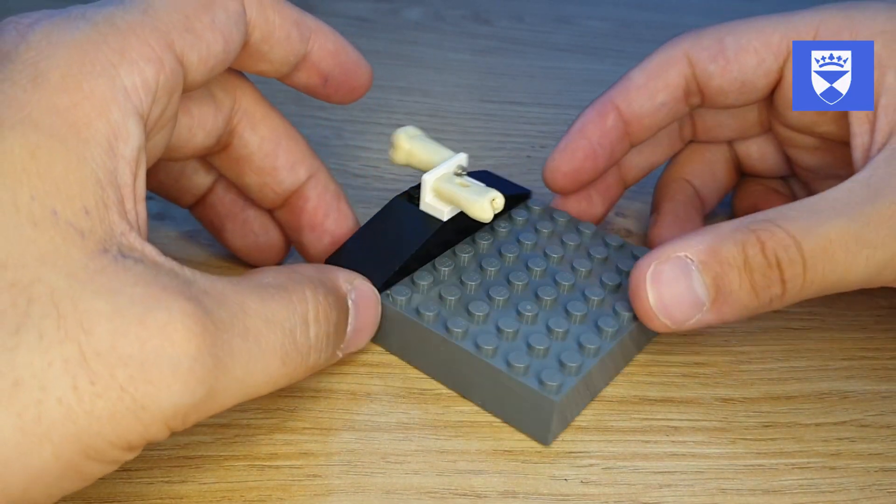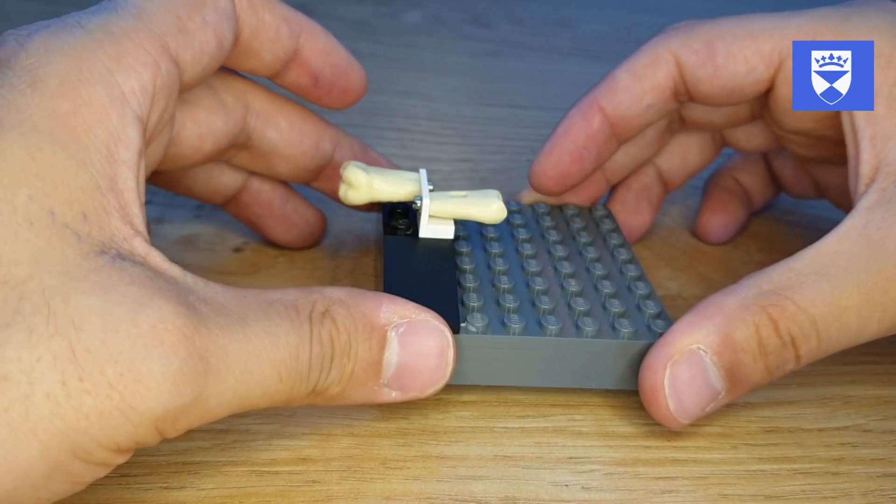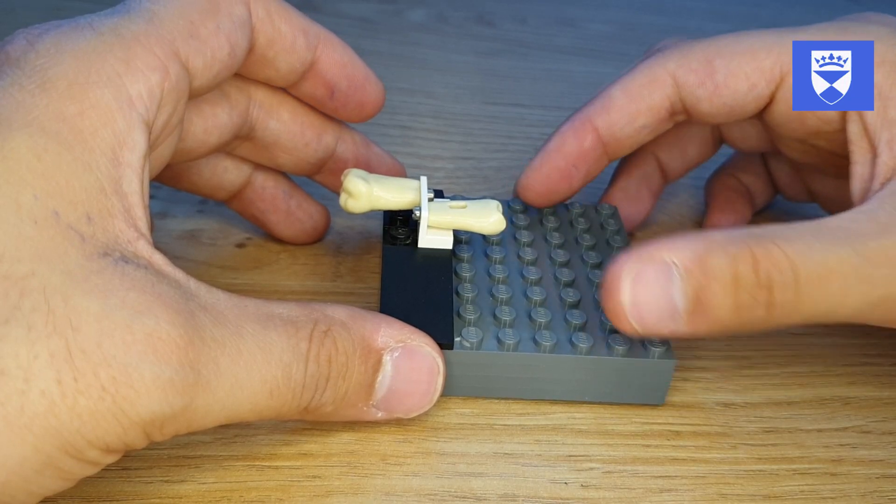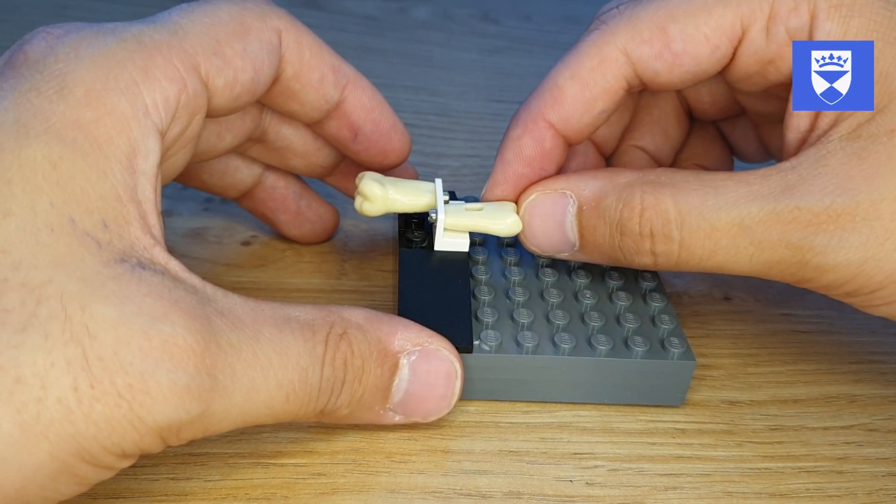The overall construction of this costs about £1.50 to £2 to make and allows us to reuse all the old teeth that we've used in other courses.